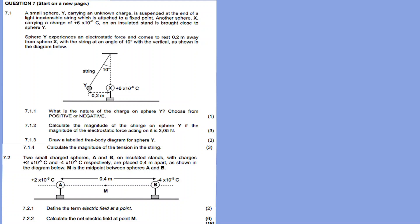What happens to like charges when they come closer together? They repel each other. But opposite charges attract. Sphere Y has an unknown charge; sphere X is positive. Y was repelled and moved to this position, so that makes charge Y positive. Like charges repel each other.